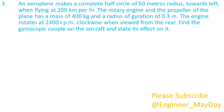Here is the last question. An aeroplane makes a complete half circle of 50 metres radius towards left, when flying at 200 km per hour. The rotary engine and the propeller of the plane has a mass of 400kg and a radius of gyration of 0.3 metres. The engine rotates at 2400rpm clockwise when viewed from the rear. Find the gyroscopic couple on the aircraft and state its effect on it.